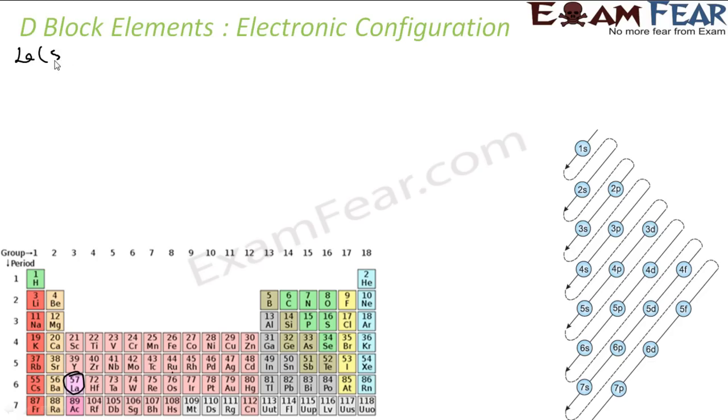Lanthanum 57, let's start with this order: 1s² 2s² 2p⁶ 3s² 3p⁶ 4s² 3d¹⁰ 4p⁶ 5s² 4d¹⁰ 5p⁶ 6s² and then we have 4f and 5d.